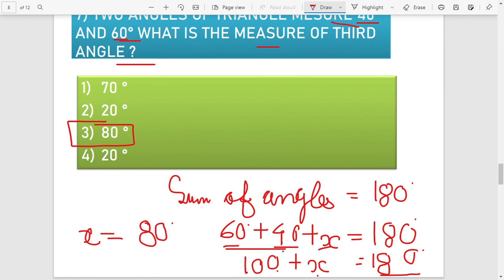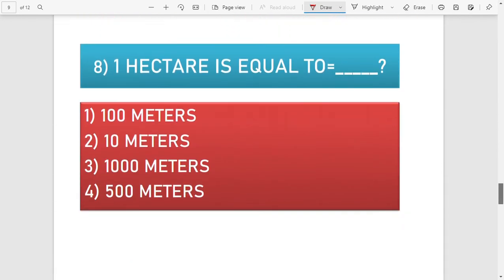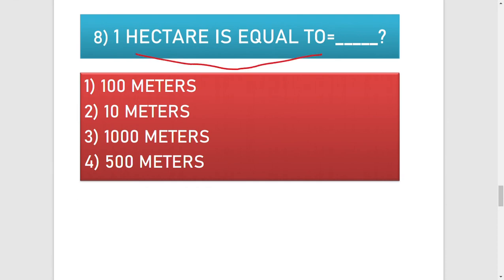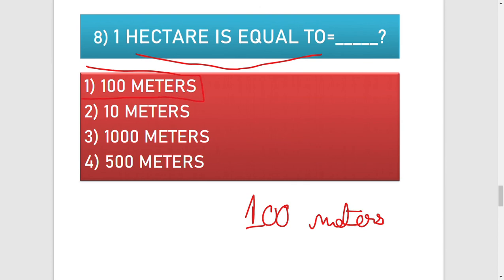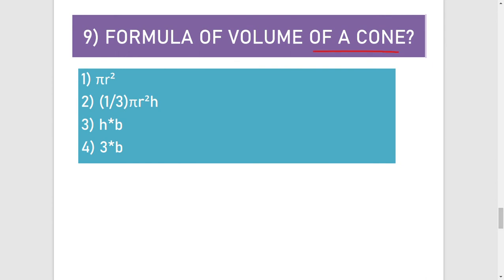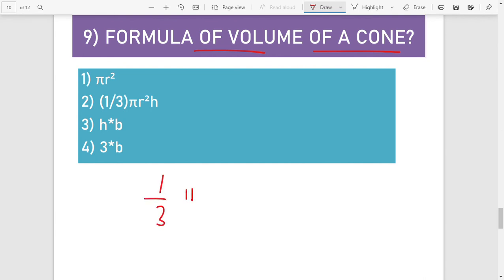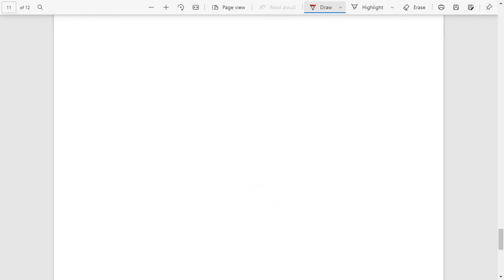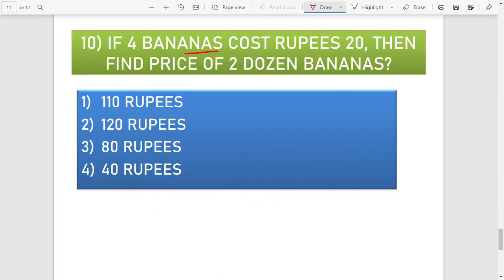The eighth question is a conversion: one hectare is equal to 100 metres — option number 1 is the right answer. The ninth question asks for the formula for the volume of a cone. The formula is (1/3) × π × r² × height. Option number 2 is the right answer; we always apply this formula when finding the volume of a cone.